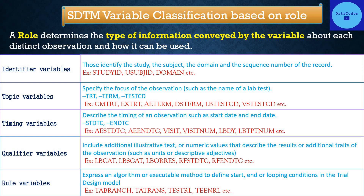Topic variables specify the focus of the observation, such as the name of the lab test — they are the subject for which data is collected. For an intervention class dataset, the TRT variable is the topic variable. For an events class dataset, the TERM variable is the topic. For findings class, TESTCD is the topic variable.